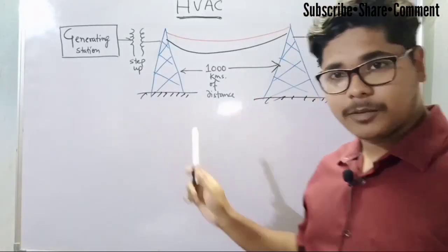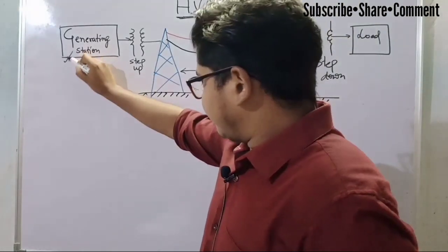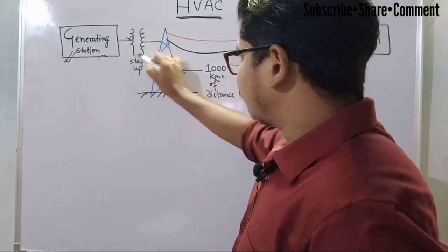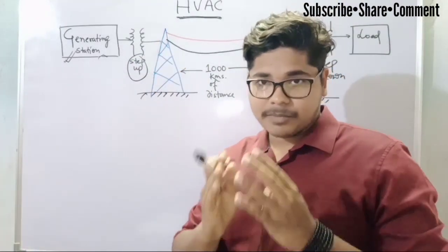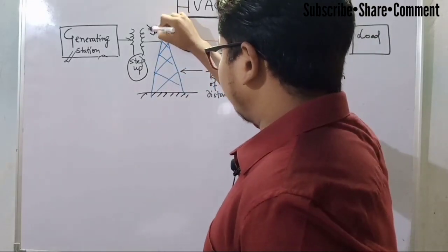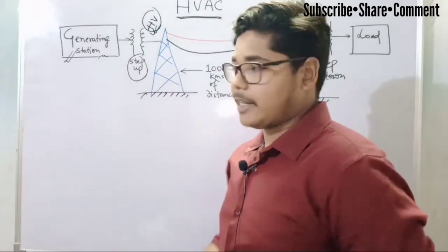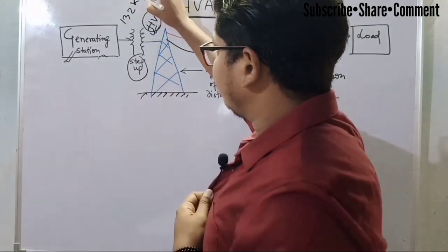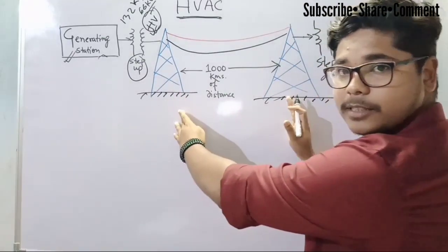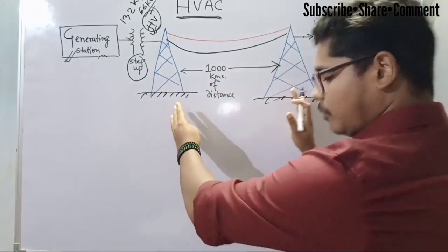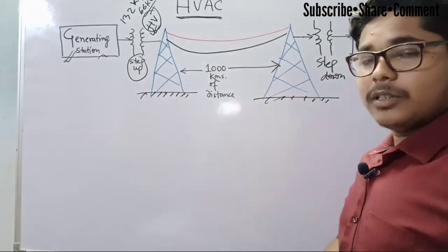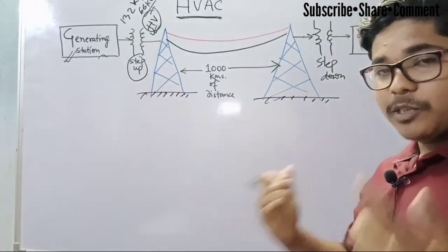See this power system network on the board. First, electricity is generated in the generating station. After that, the voltage is boosted by using a step-up transformer, which increases the voltage level. In the secondary portion, we get electricity in high voltage ranges like 132 kV or maybe 66 kV. After that, this is the transmission line portion, where electricity travels thousands of kilometers. In this portion, we always use electricity at a high voltage level.